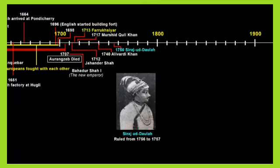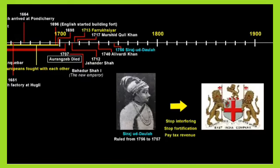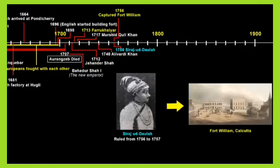Siraj ud-Daulah became the Nawab of Bengal after the death of Aliwardi Khan. The company wanted a puppet ruler who would grant them trade concessions and privileges. They even tried to help one of Siraj ud-Daulah's rivals become the Nawab. This made Siraj ud-Daulah angry, and he asked the company to stop meddling in political affairs, stop building forts, and pay the revenue. Siraj ud-Daulah then attacked the English factory at Kasim Bazar, captured company officials, locked the warehouse, and dismissed English chiefs.